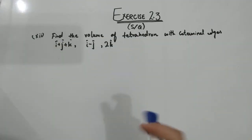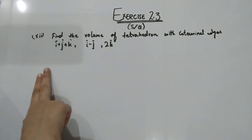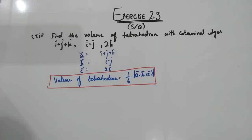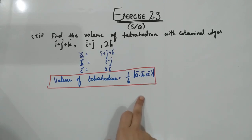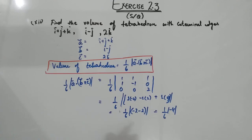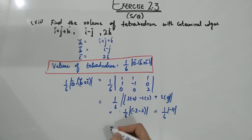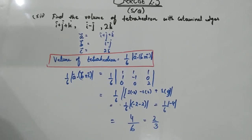Parts 8 to 11 are done on the same lines as part 7. Part 12 asks for the volume of a tetrahedron with co-terminal edges — also an application of the scalar triple product. The formula is: volume of parallelepiped divided by 6. Solving gives minus 4 over 6; taking the absolute value gives positive 4 over 6, which simplifies to 2 over 3 cubic units. Cubic units must be mentioned.